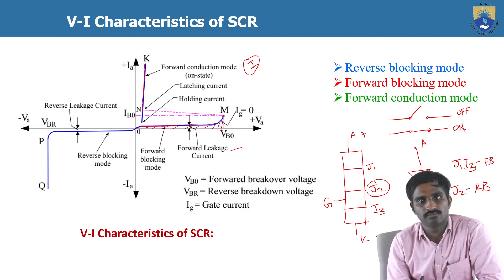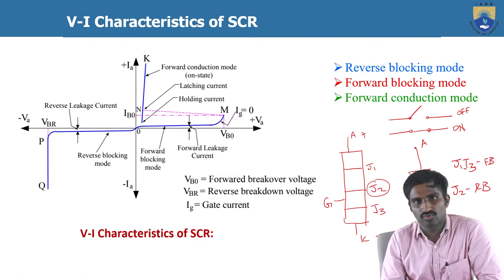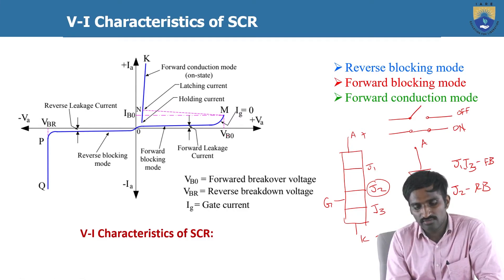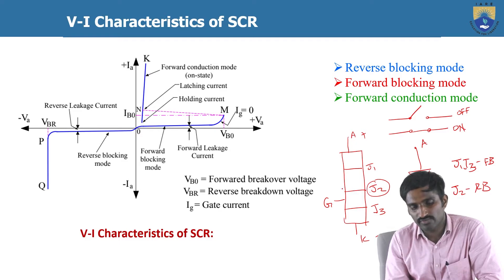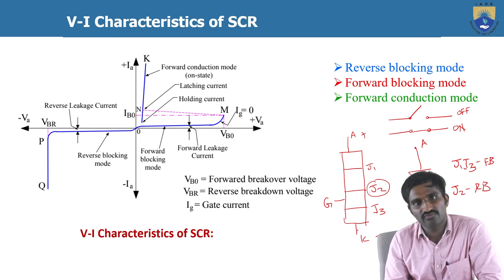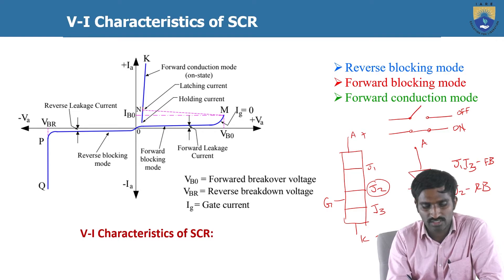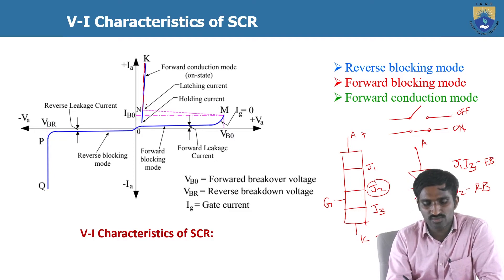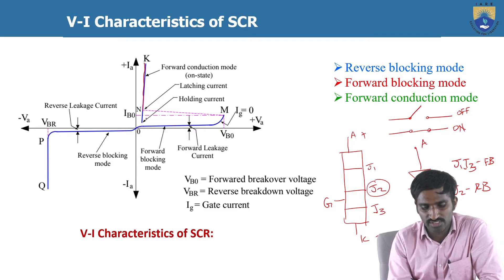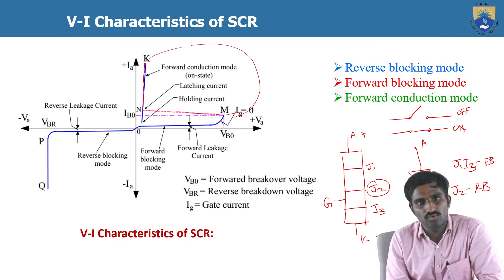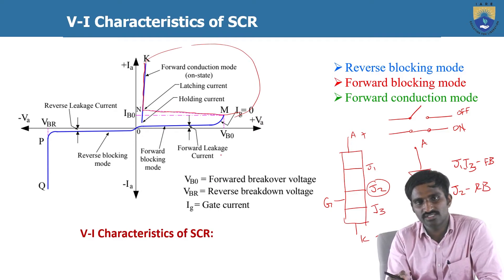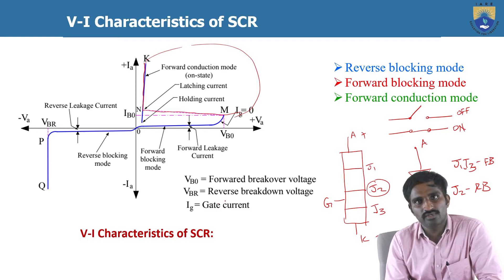Next is the forward conduction mode. Once the forward voltage reaches VBO, or when you apply the gate signal, junction J2 breaks down and conduction of the SCR starts — the current flowing through the SCR increases rapidly. This mode is called the forward conduction mode, which is also called the on-state mode. All the region from the dotted line onward is the forward conduction mode, meaning the thyristor is conducting.